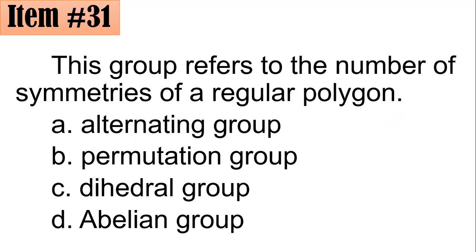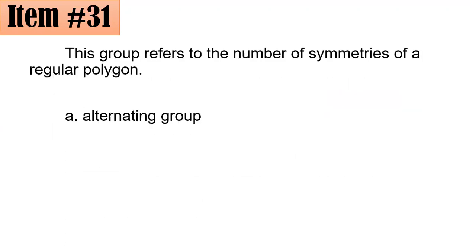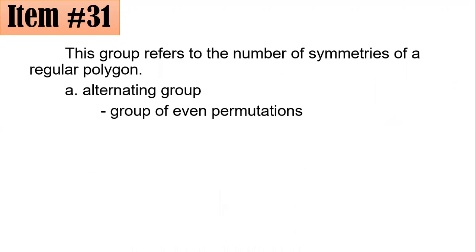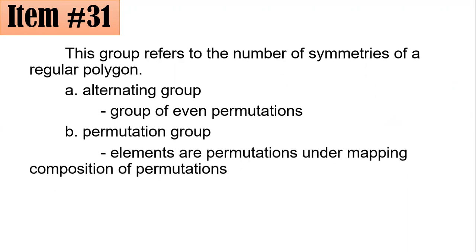For this problem, it is actually letter C. When we speak about alternating group, it is a group of even permutations. Permutation group, its elements are permutations under mapping composition of permutations. For letter C, it's in fact the correct answer. It refers to the number of symmetries of a regular polygon.